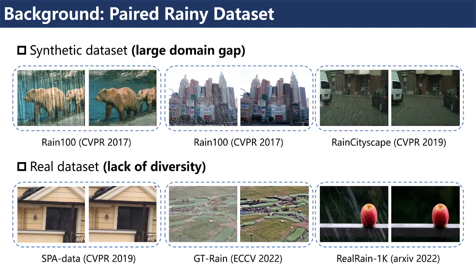In order to remove the rain degradation from a clean background, a paired raining dataset which has raining and clean counterparts is necessary for network training. However, paired synthetic raining images are fake, which creates a domain gap with real raining images.